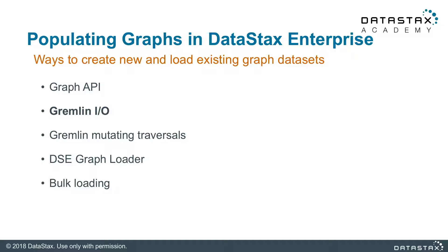Gremlin IO is suitable for exporting and importing small to medium-sized existing graphs and it's recommended for use in development environments. The Graph API is generally slower than the Gremlin IO utility, but the Gremlin IO utility is more suitable when exporting and importing existing graphs.